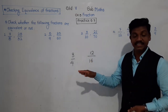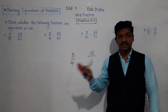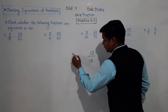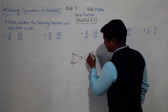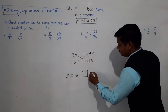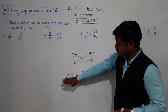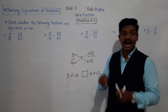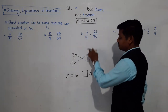So which method should we apply to check whether two fractions are equivalent or not? We are going to use the method of cross product. In the cross product method, we multiply the numerator of the first fraction with the denominator of the second, and vice versa. If these two cross products are equal, then we can say the two given fractions are equivalent.